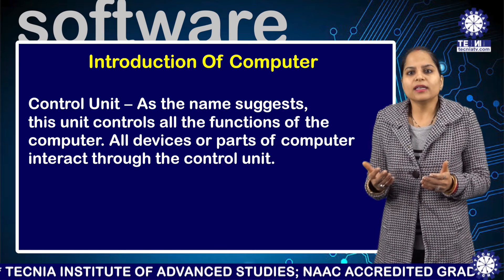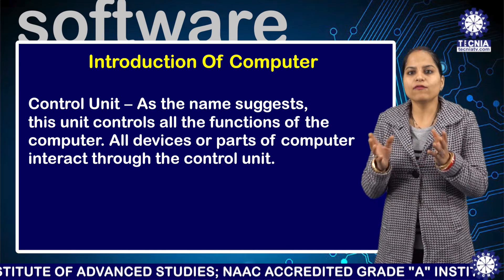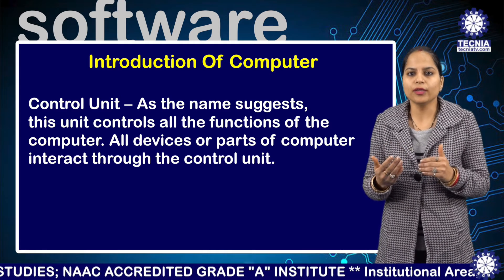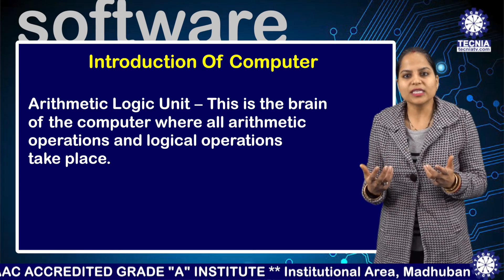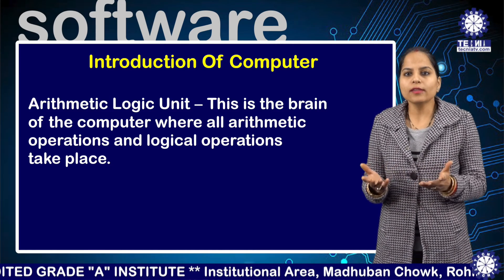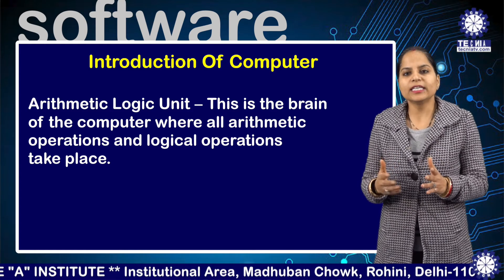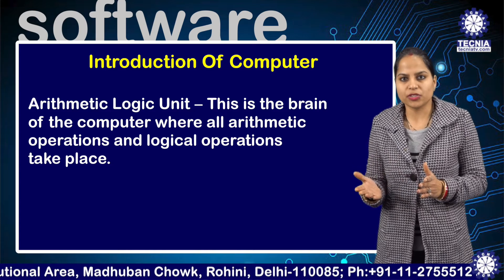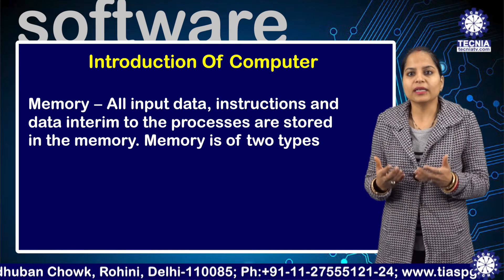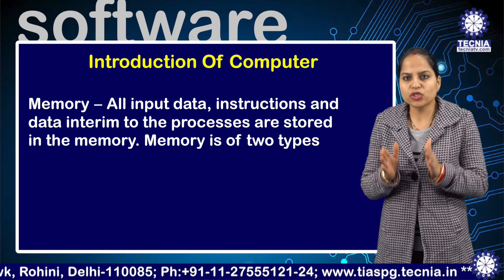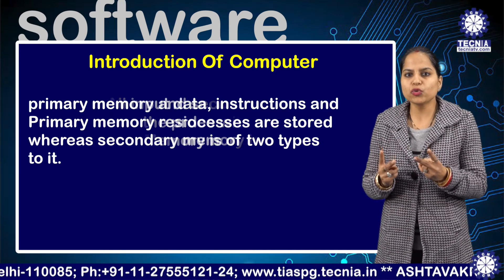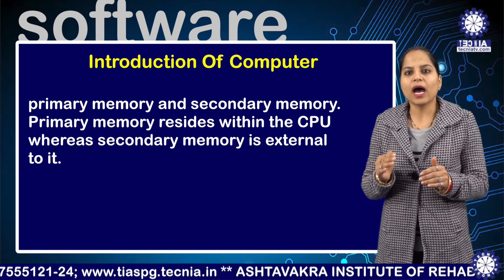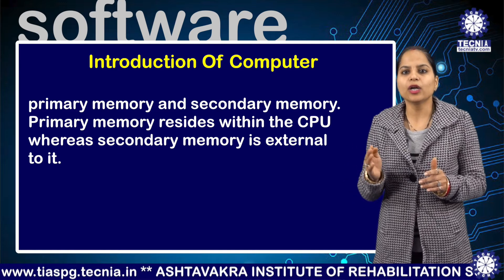Control unit: as the name suggests, this unit controls all the functions of the computer. All devices and parts of the computer interact through the control unit. Arithmetic logical unit: this is the brain of the computer, where all arithmetic operations and logical operations take place. Memory: all input data, instructions, and data to be processed are stored in the memory. Memory is of two types: primary memory and secondary memory. Primary memory resides within the CPU, whereas secondary memory is external to it.